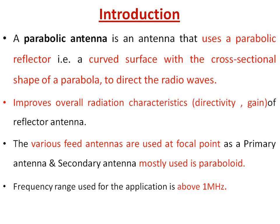In the introduction: what is a parabolic antenna? A parabolic antenna is the antenna which uses a parabolic reflector. In reflector antennas there are basically two antennas — the primary antenna and the secondary antenna. The primary antenna feeds the overall antenna, and the secondary antenna performs the function of reflection. Here the secondary antenna is parabolic in nature, which is why it is called a parabolic reflector antenna. It is a curved surface with a cross-sectional shape of a parabola which helps to direct radio waves in a particular direction, improving directivity, gain, and radiation pattern.